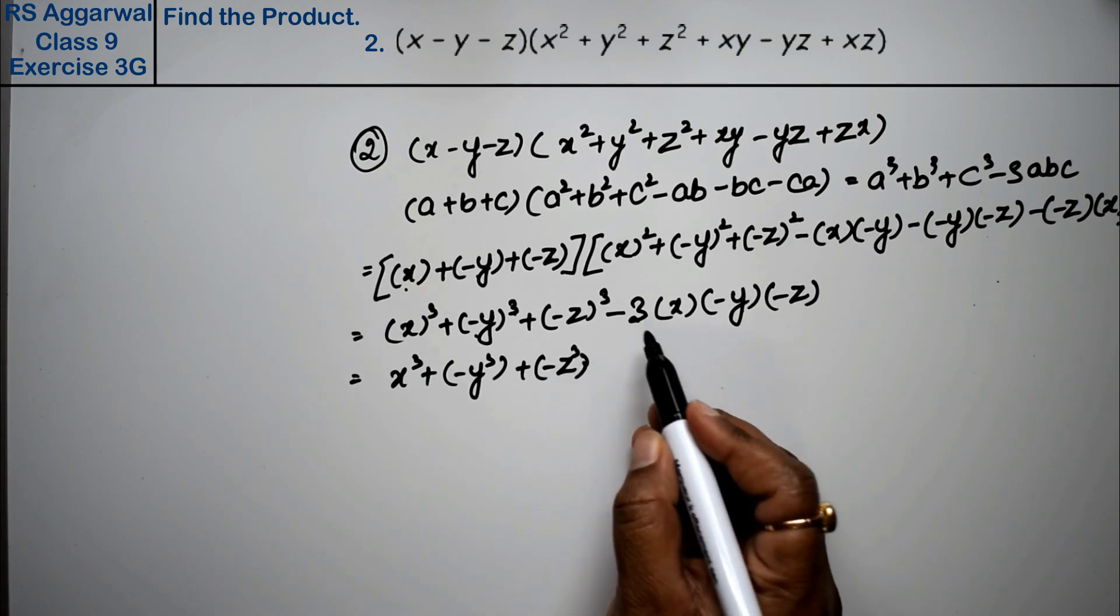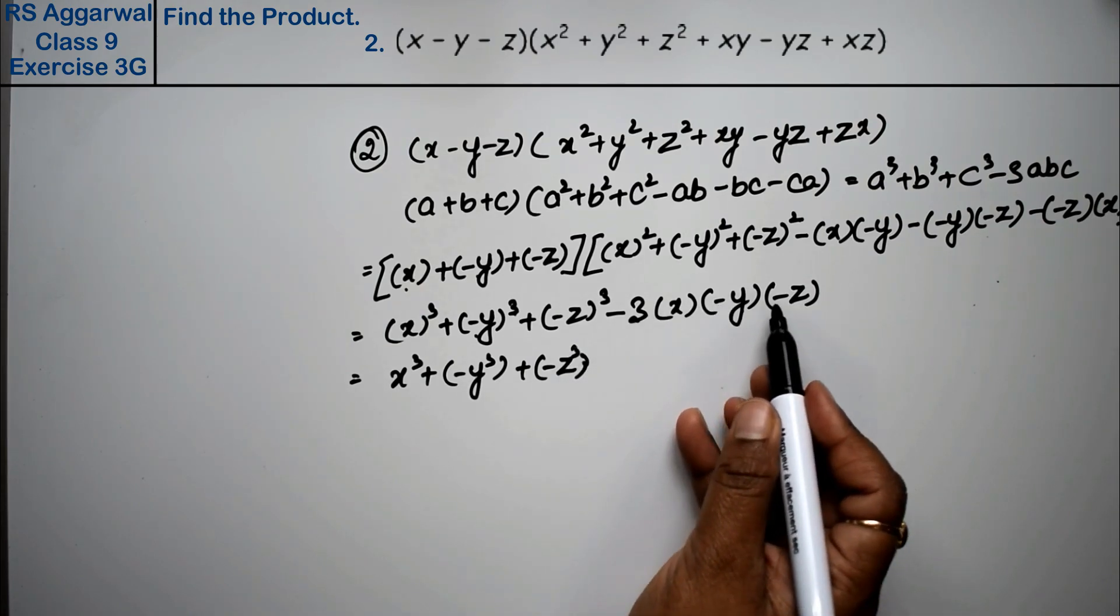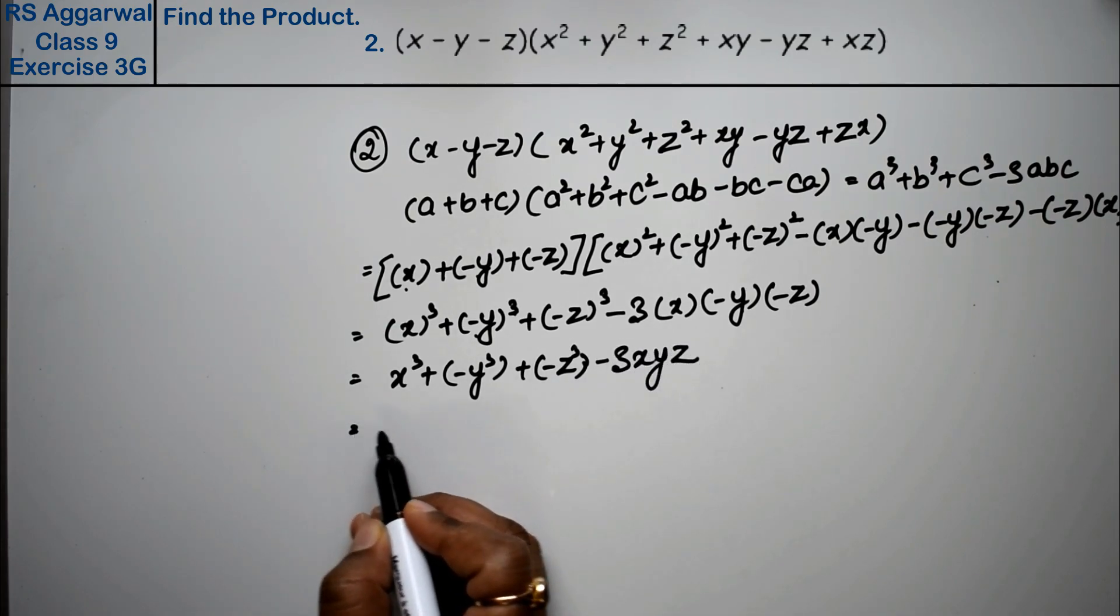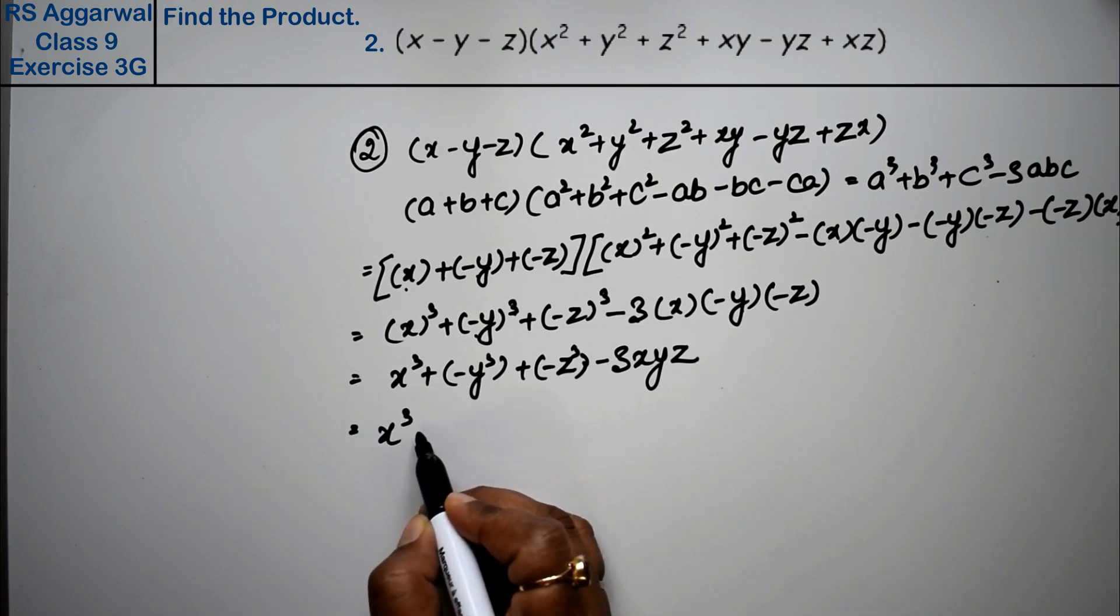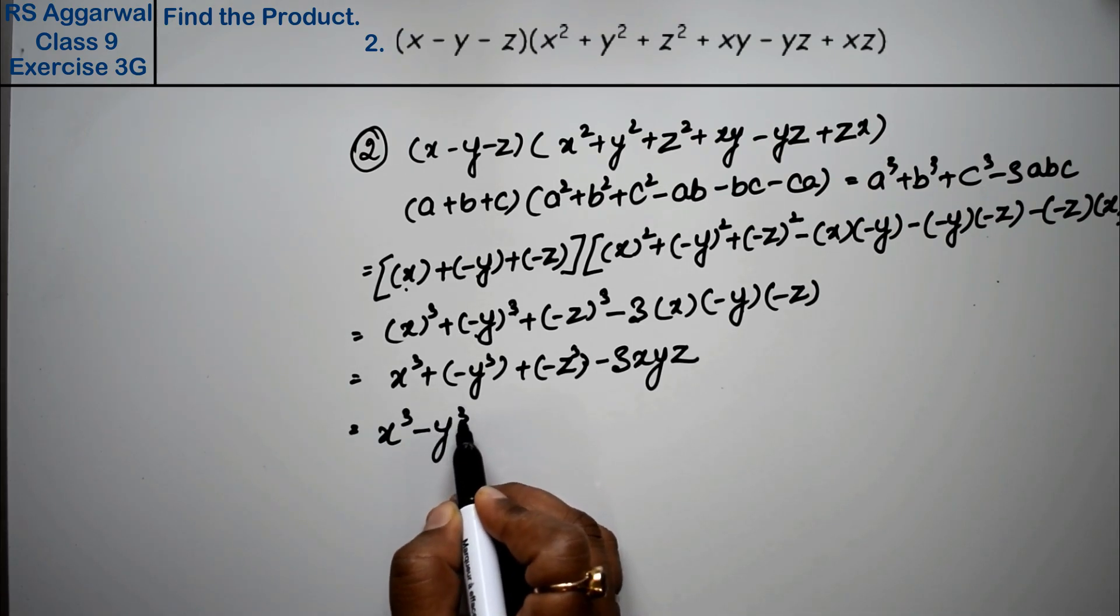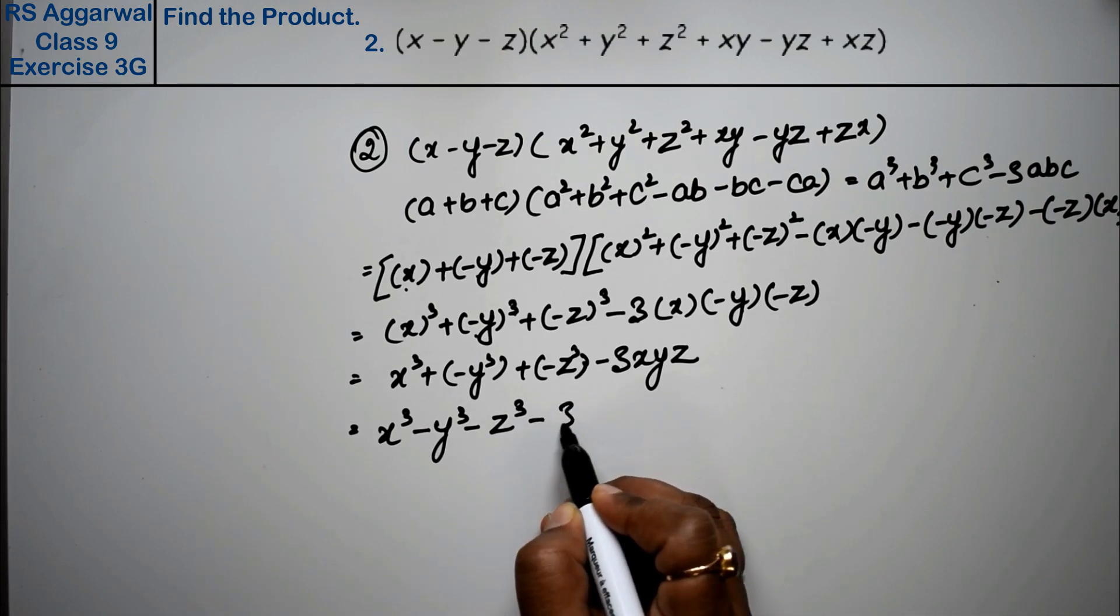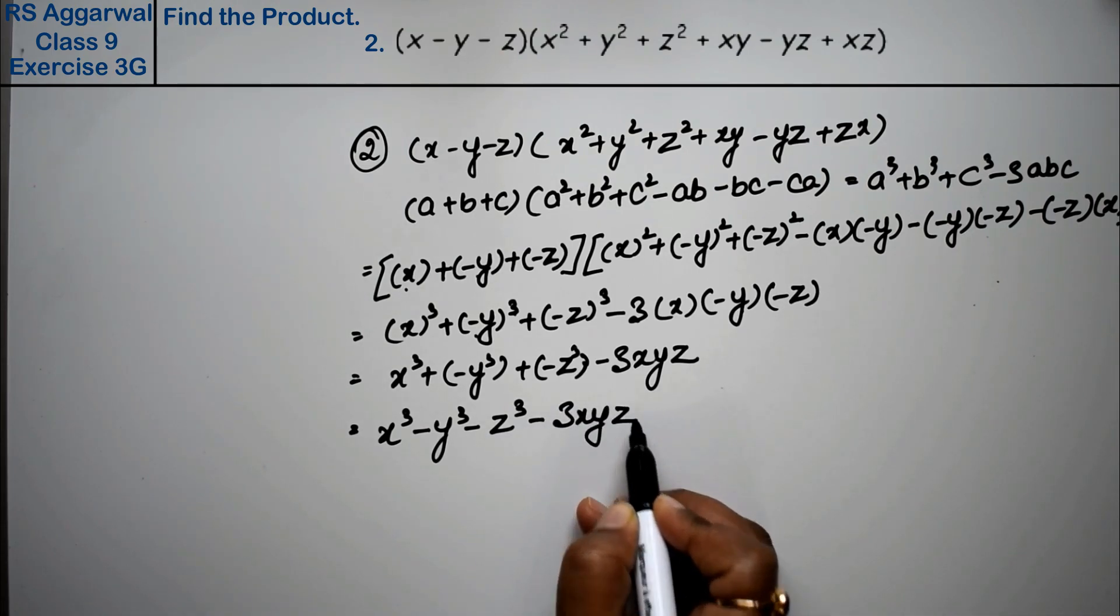minus minus plus, plus minus minus 3xyz. Now brackets open. So here is x³ - y³ - z³ - 3xyz is the answer.